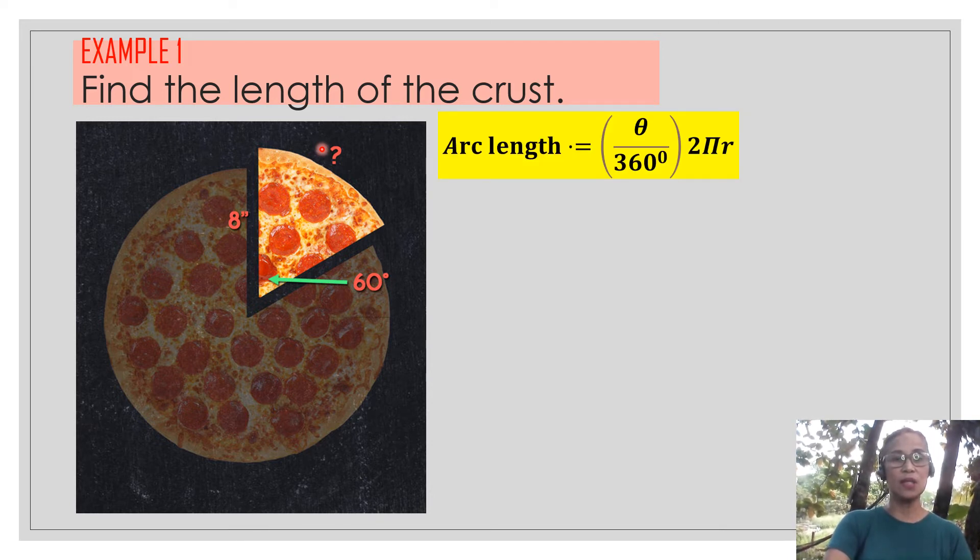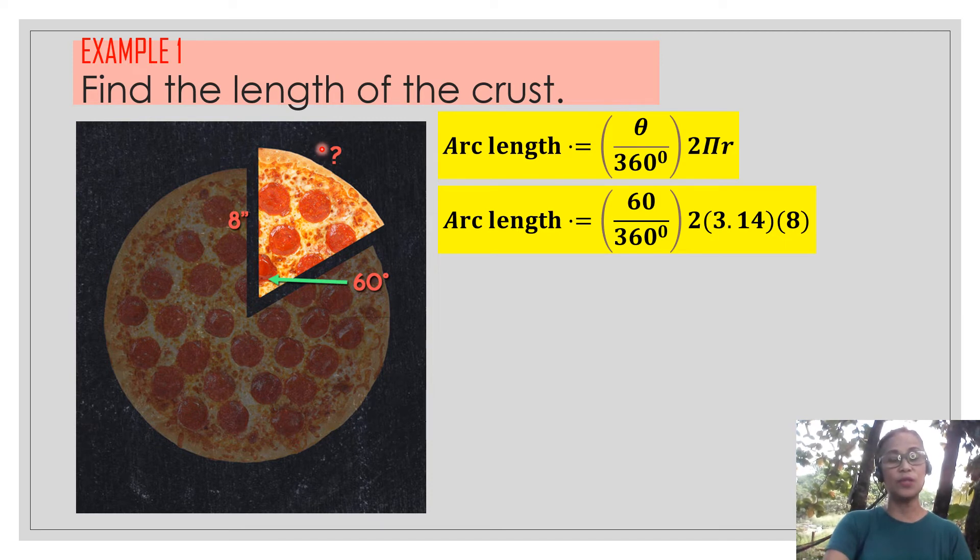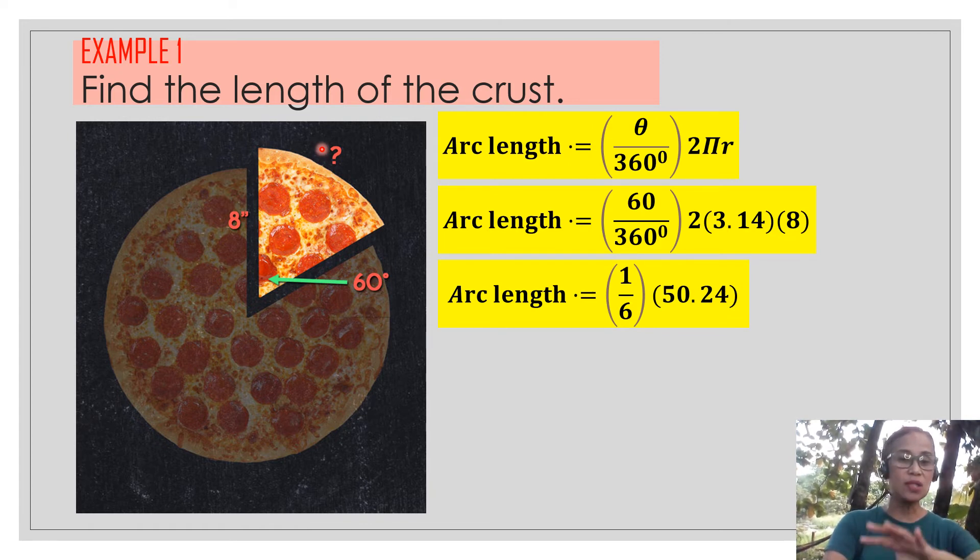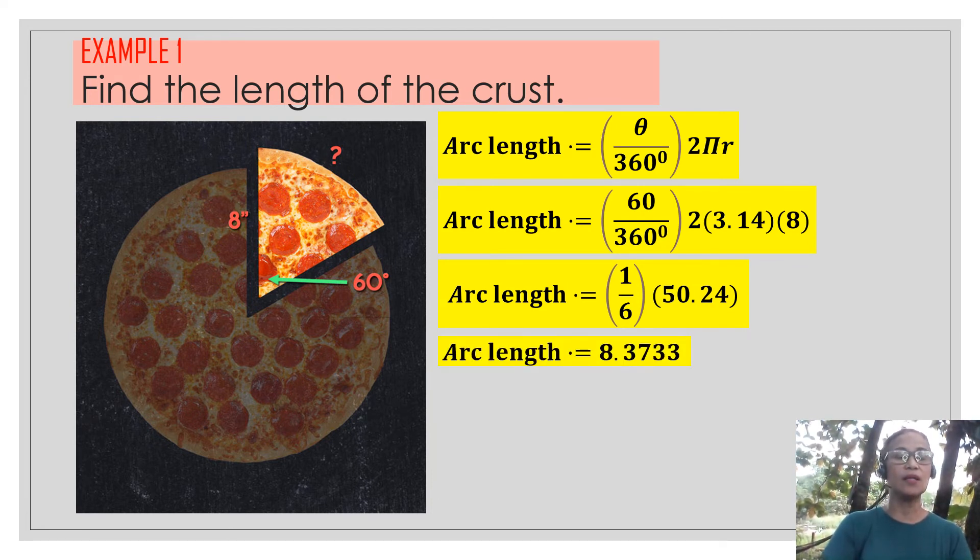Theta over 360 times 2 times pi times r, substitution, 60 over 360 times 2 times 3.14 times 8. Then multiplying all together, 60 over 360 is just 1 sixth. 1 sixth of the whole pizza. And the circumference of the whole pizza is 50.24. Then we just need 1 sixth of that, and the answer is 8.37.